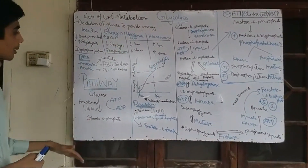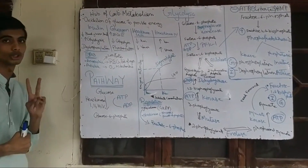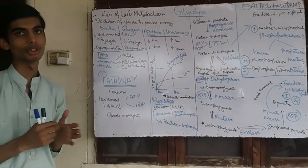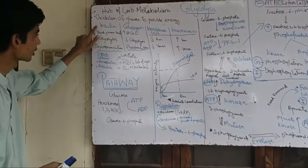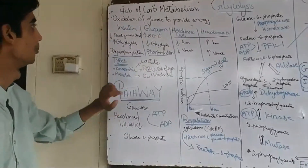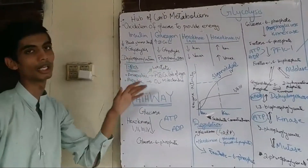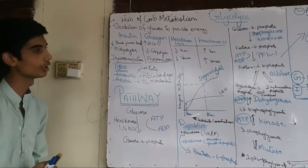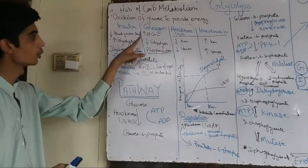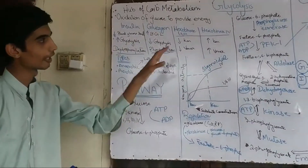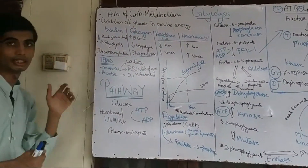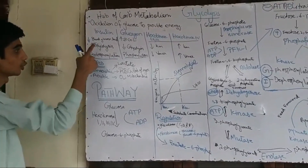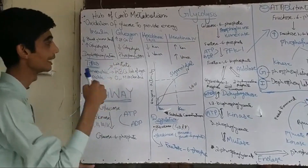Before going towards the steps of glycolysis, we need to know the two major hormones important in metabolism. For carbohydrates, lipids, or any metabolism, the major hormones involved are insulin and glucagon. Insulin functions to lower the blood glucose level, whereas glucagon is the antagonist of insulin and increases the blood glucose level. Since glycolysis is the way cells utilize glucose and lowers blood glucose, insulin will enhance glycolysis whereas glucagon will decrease it.